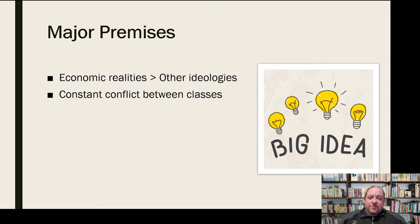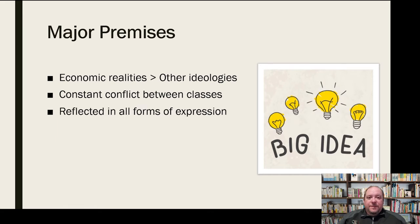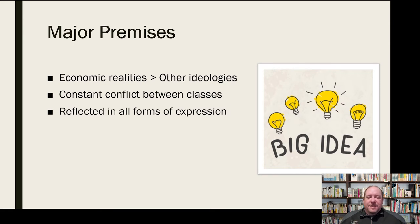There's a constant conflict between the classes because that's the most important thing. Marxist analysis says there's constant conflict between the haves and the have-nots because of that economic difference, the difference in the scale of economy they live under. This is reflected in all forms of expression — in critical media analysis, those differences in class and economic viewpoints are really reflected in all the forms of expression of the media that gets created.